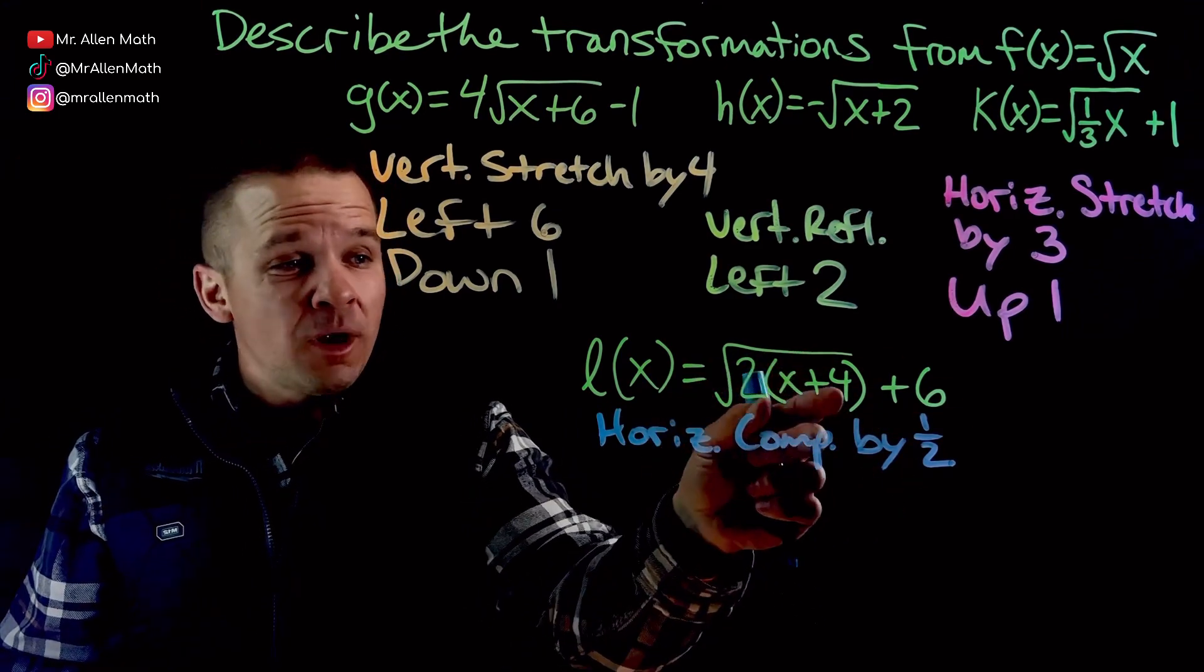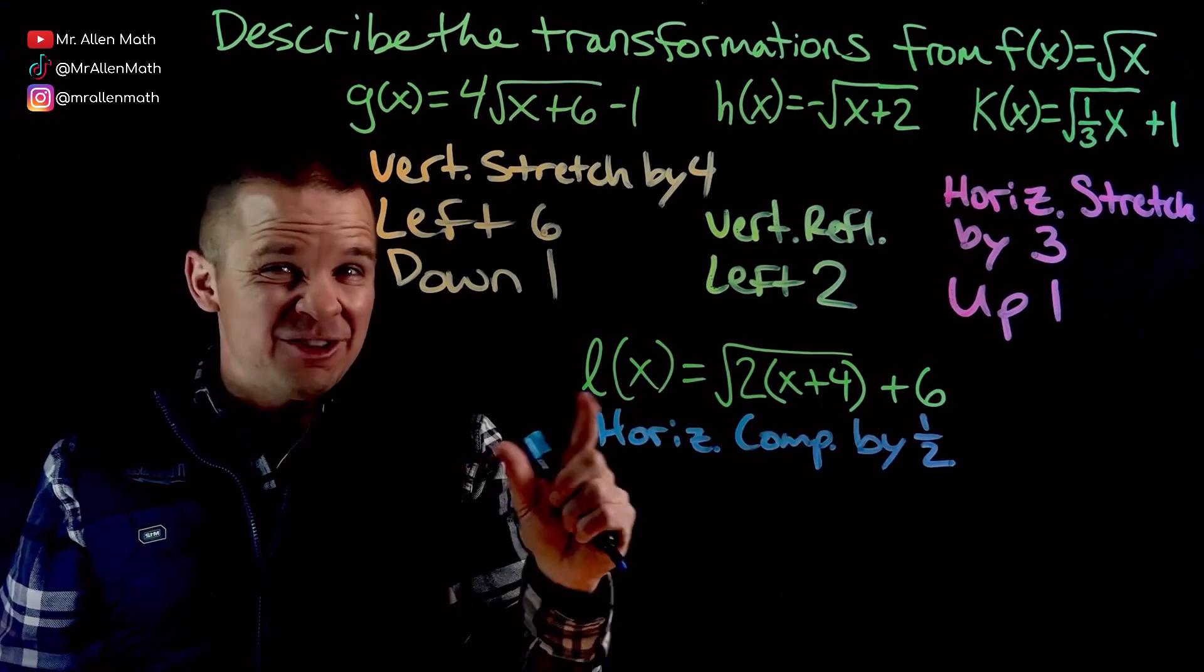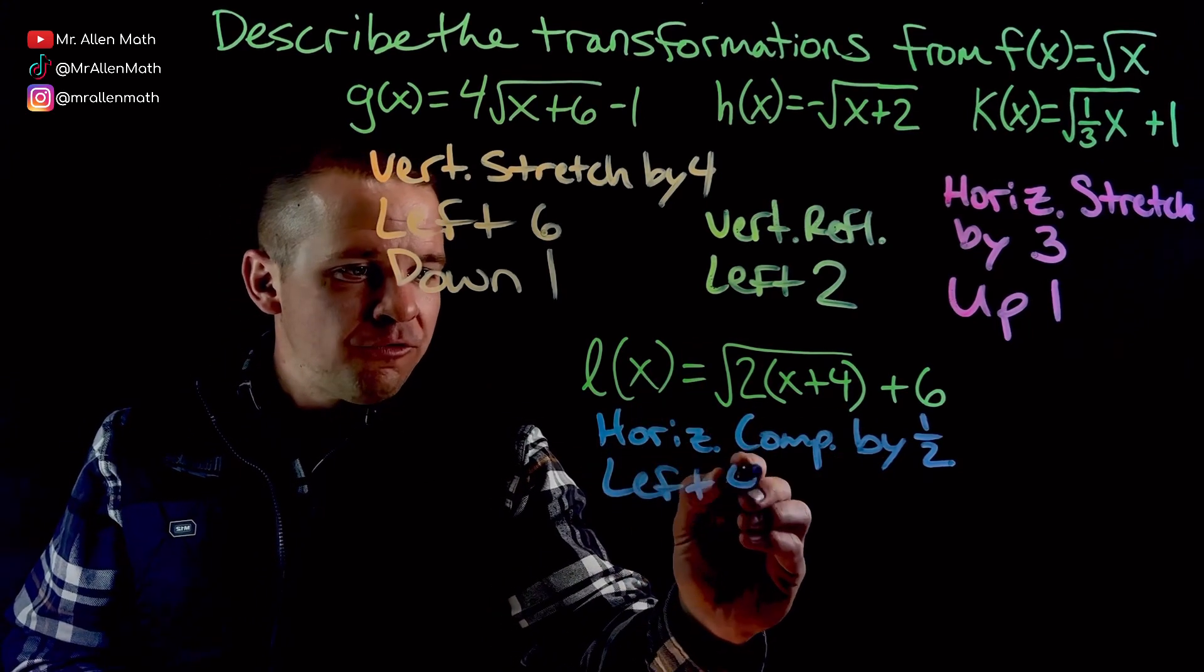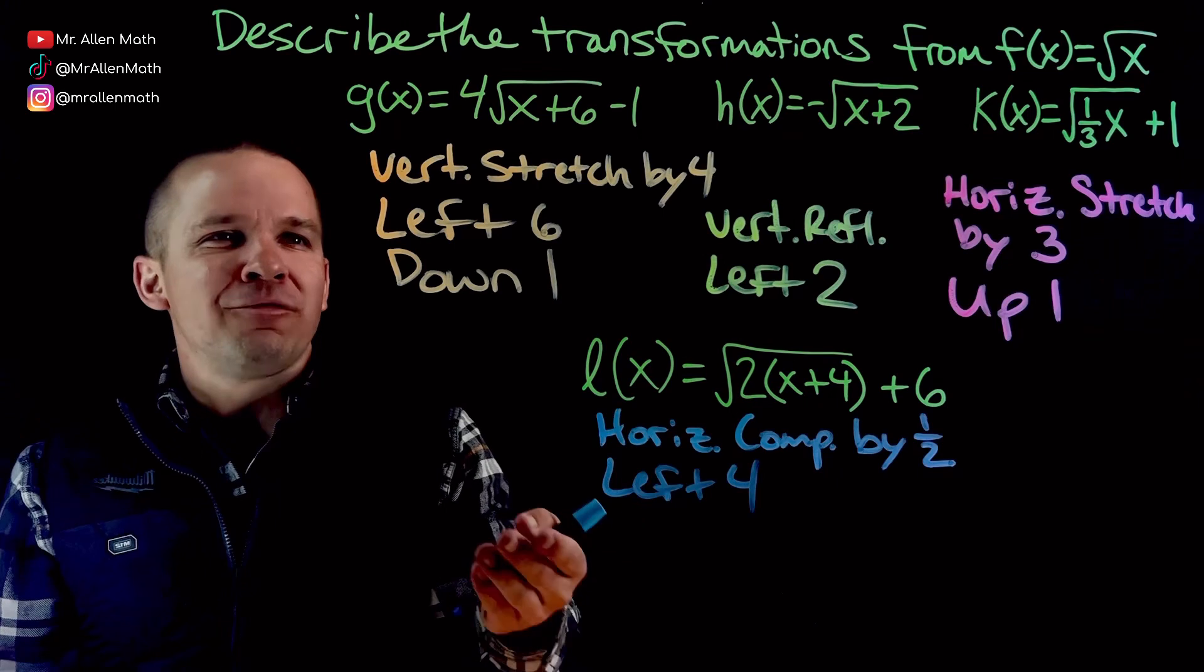Now we've got our x plus 4. It's very important that it's in factored form. If it's not, you've got to do some stuff. This one is, so we're good. This is going to be left 4. I should have done x minus 4, so we're going to go right 4.